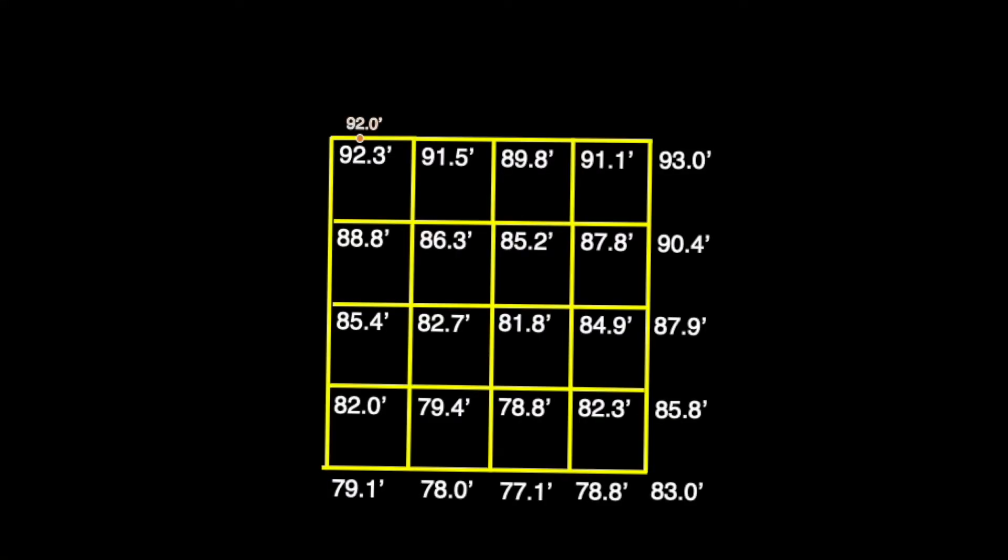Now that we have our location for the 92-foot contour line on the horizontal of the grid, we'll attempt to find the same point on the vertical as well, so we can connect the dots and draw on our first line. The good news is that the mathematical process for obtaining this point vertically is the same as it was horizontally.